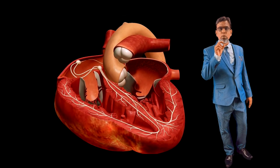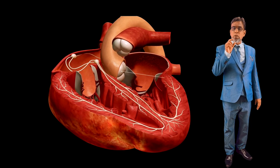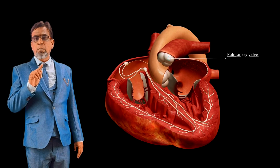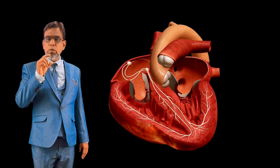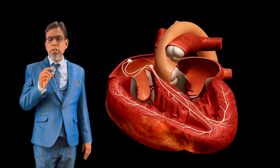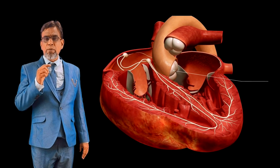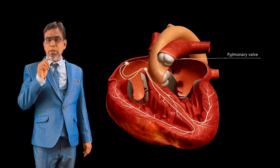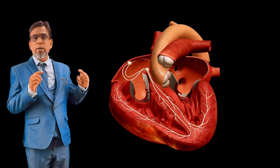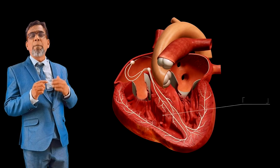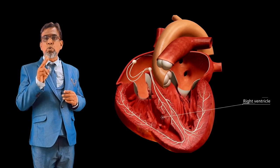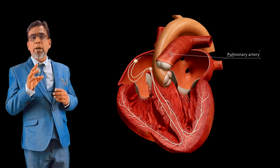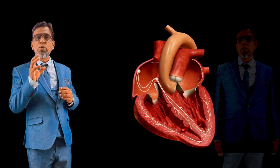Two other important valves are also present in the heart: the aortic valve, present between the left ventricle and the aorta, and the pulmonary valve, present between the right ventricle and the pulmonary artery. These two valves are called semilunar valves because they look like a half-moon shape.